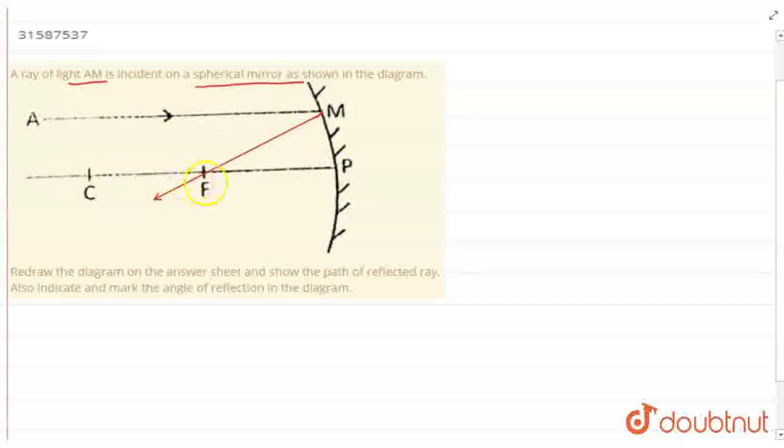This is the principal axis, so AM is parallel to principal axis. That is why this ray after reflection will pass through my focus. Now the question asks to also mark the angle of reflection in the diagram.